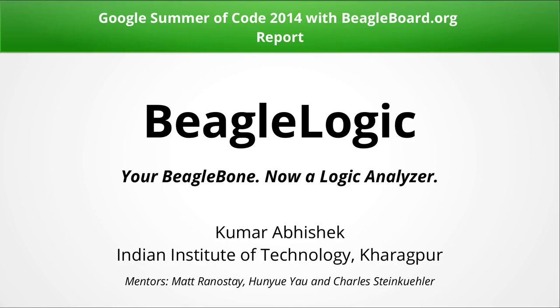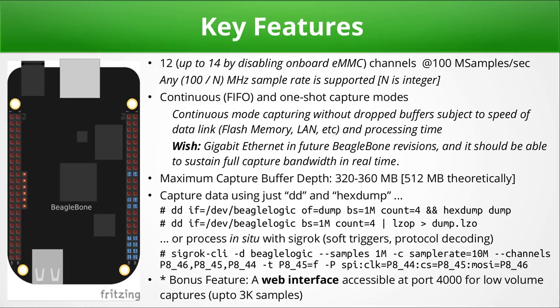Presenting the final report for BeagleLogic, a Google Summer of Code project with BeagleBone.org that realizes a 14-channel 100 mega samples per second logic analyzer using both the programmable real-time units and a kernel module on the BeagleBone or the BeagleBone Black.